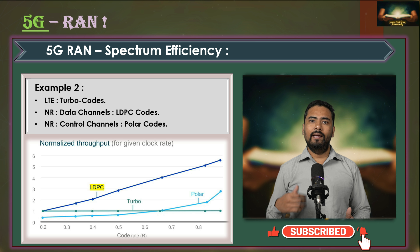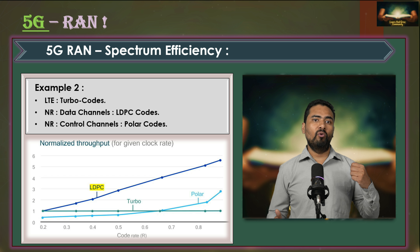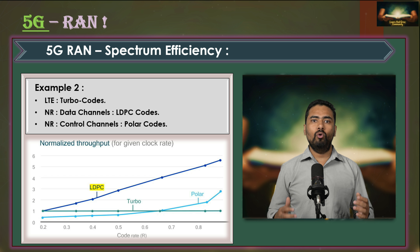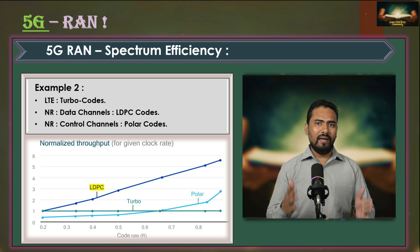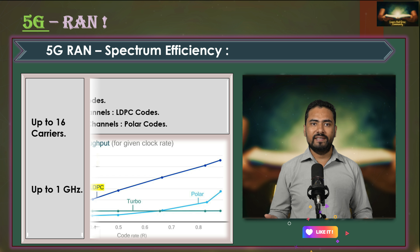Secondly, NR also employs polar codes which offer about 0.5 dB gain over turbo codes, making them suitable for control traffic.